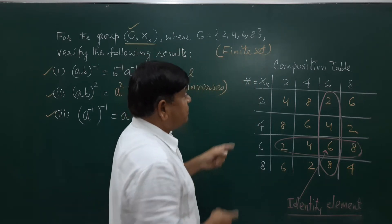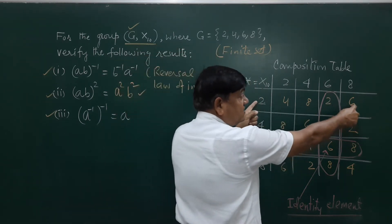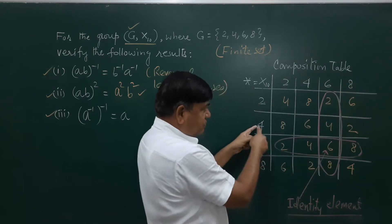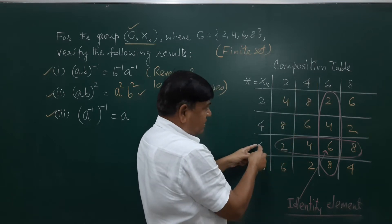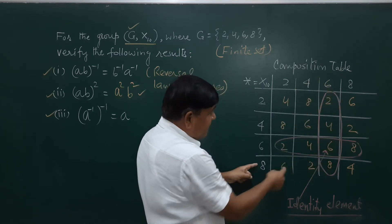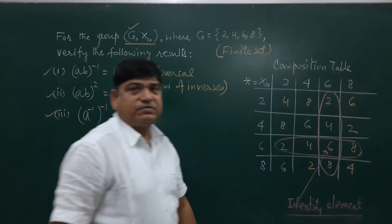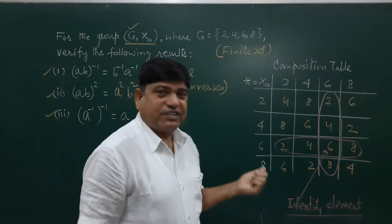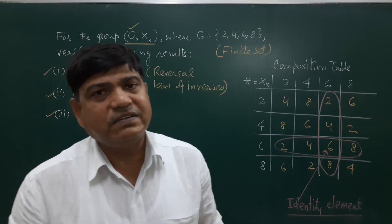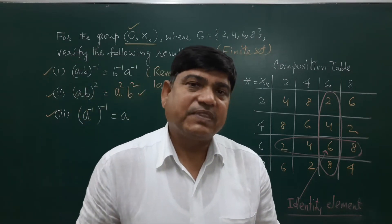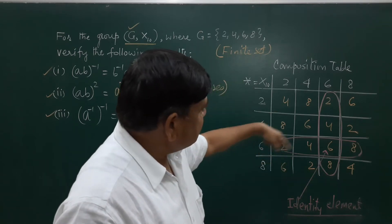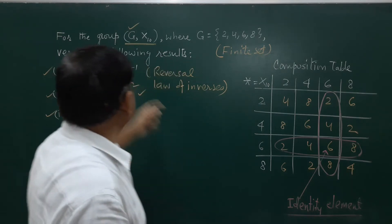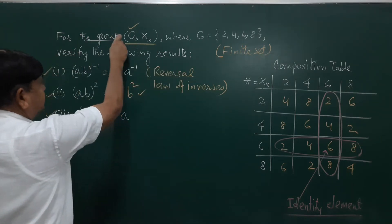Since 6 is the identity element, we can read off the inverses: inverse of 2 is 8, inverse of 4 is 4, inverse of 6 is 6, and inverse of 8 is 2. Associativity holds for multiplication, so looking at this table we confirm this is a group. This is the verification.